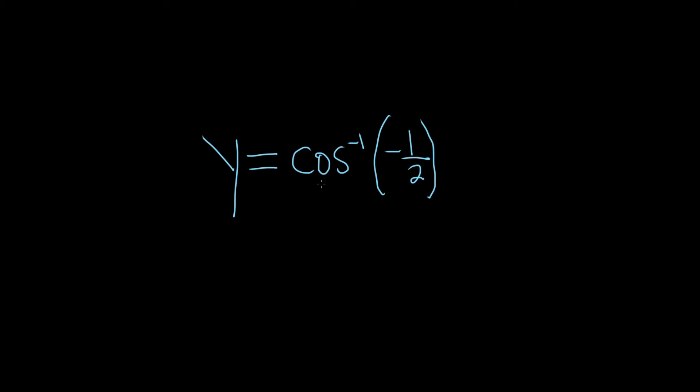The first thing I like to do in these problems is to get rid of this inverse notation. So if your inverse function takes negative 1 half and sends it to y, that means the cosine function undoes that. So it takes y and sends it back to negative 1 half. You can always just rewrite it this way.